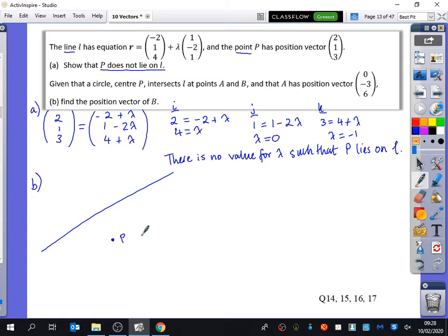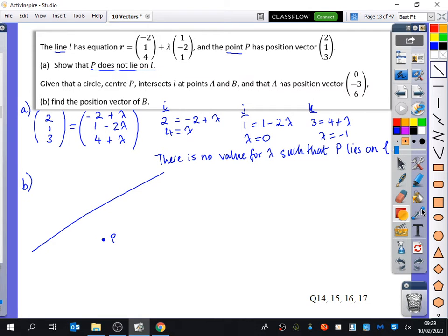It says, given that a circle, centre P, intersects L at points A and B, and that A has position vector (0, -3, 6), find the position vector of B. So, I'm going to draw a circle, but we don't technically need a circle. We can think about this in a different kind of way, but I'm going to start off by drawing a circle. So, centre P, there is a circle, and it's going to intersect the line in two places. So, that's what the diagram looks like.